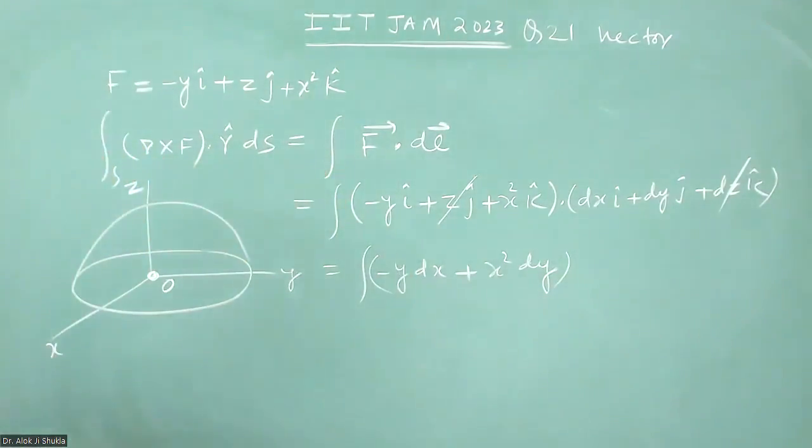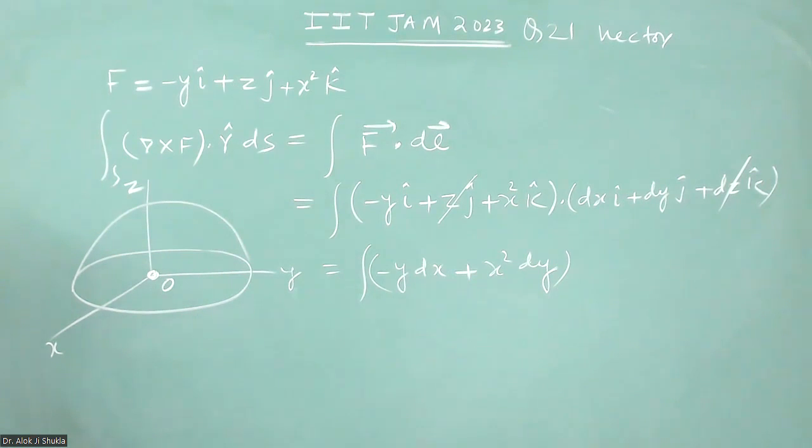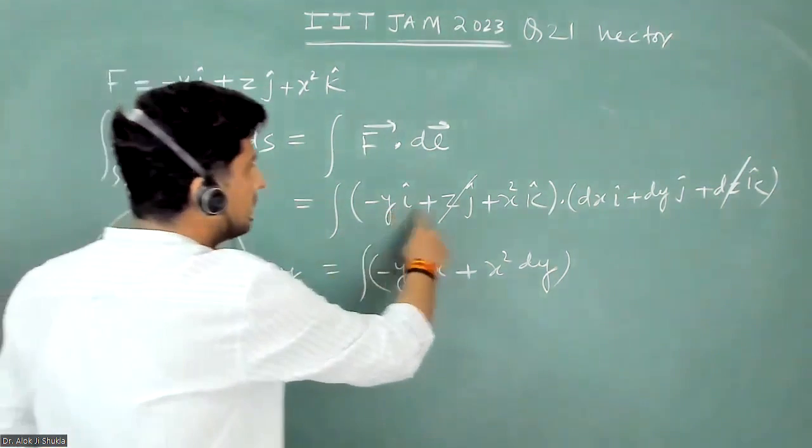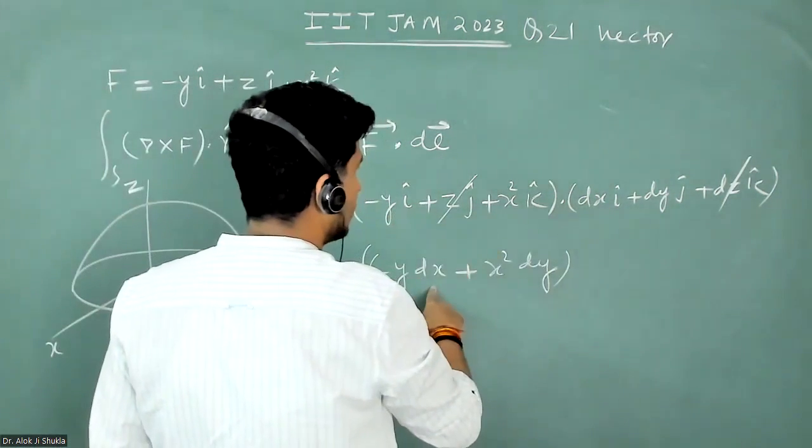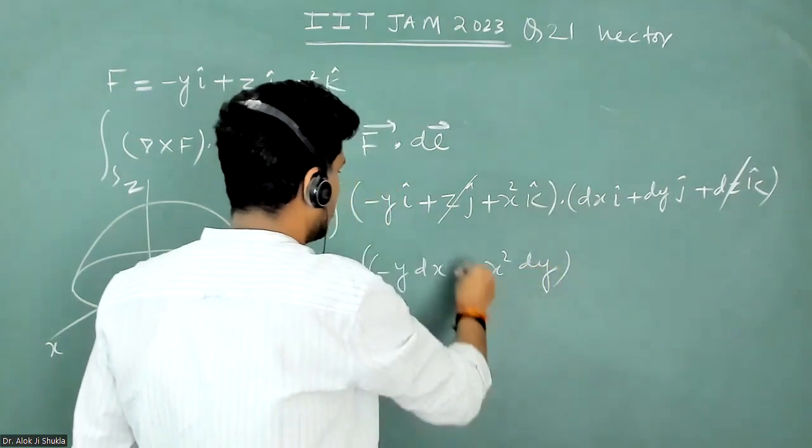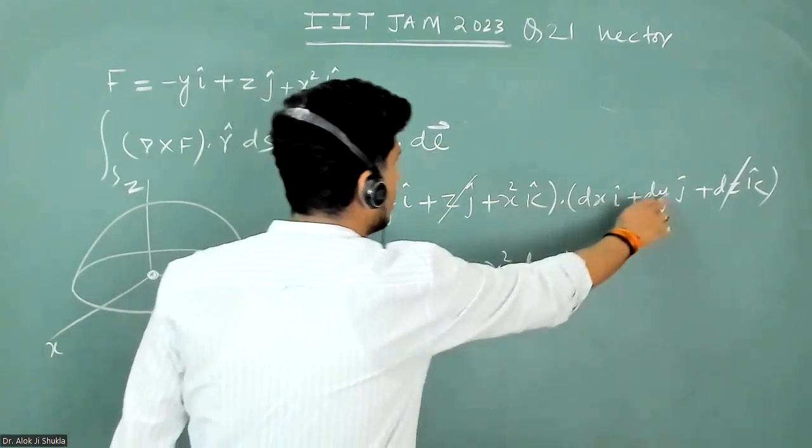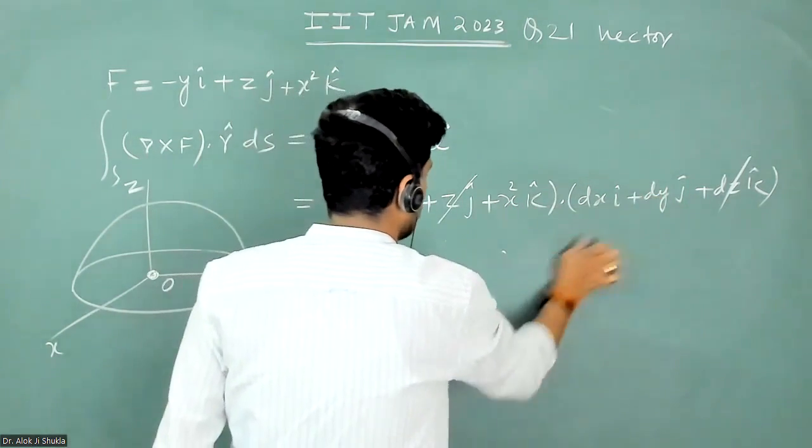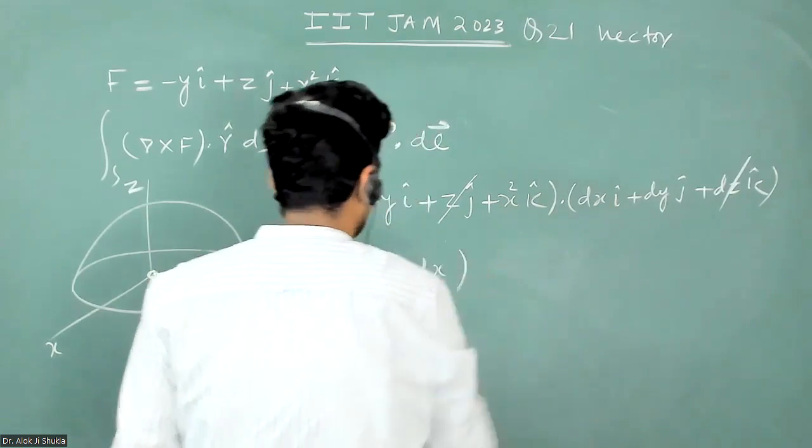And now it will be better if we go into polar coordinates. So we can write the value of... this is i cap dot i cap, so I got minus y dx. And now only this much because this will be multiplied to this, so minus y dx.